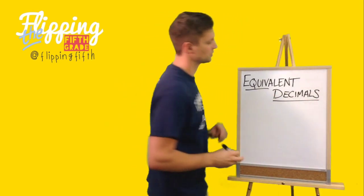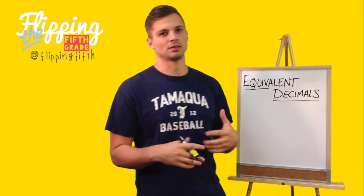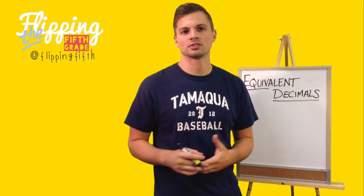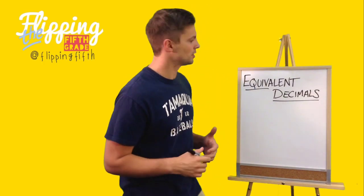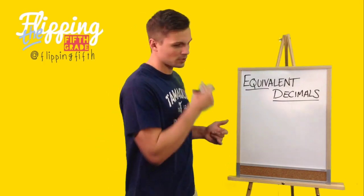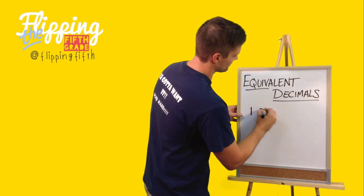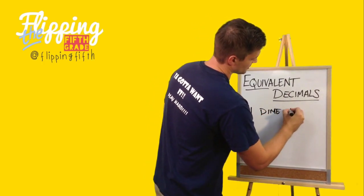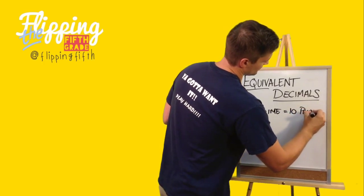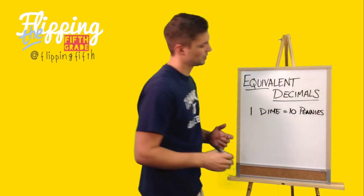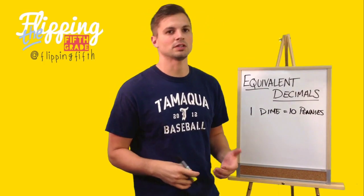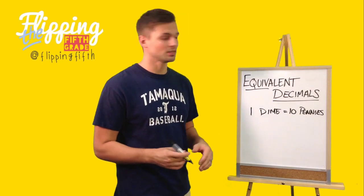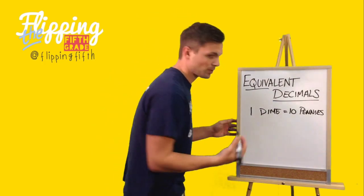Equivalent decimals are the same, just written differently. They may look a little different but they mean the exact same thing. I like relating it to money — if someone has one dime and another person has ten pennies, we would say they have the same amount of money, although it looks completely different. They both have ten cents.